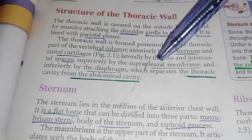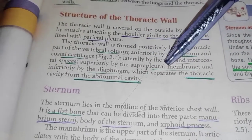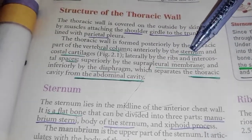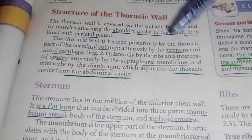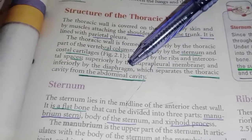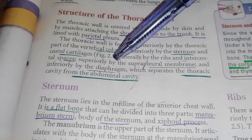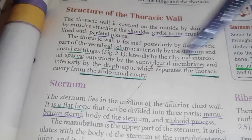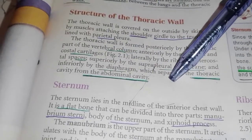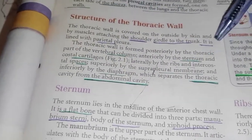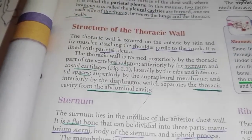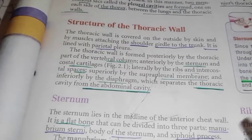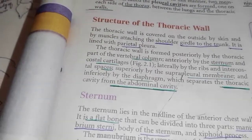Besides, if we talk about superiorly, it is formed by the suprapleural membrane, and inferiorly by the diaphragm, which separates the thoracic cavity from the abdominal cavity.